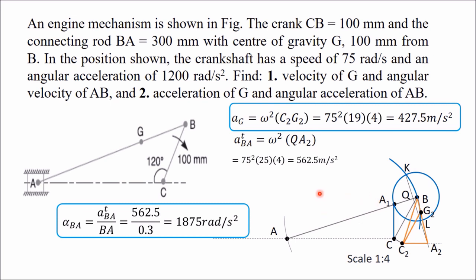When using Klein's construction, the margin of error is very small because even a small mistake causes a large difference in the final answer, so draw as precisely as possible. Compared to the relative velocity and acceleration diagram method, Klein's construction is quite simple — however, it can only be applied to a single slider crank chain.